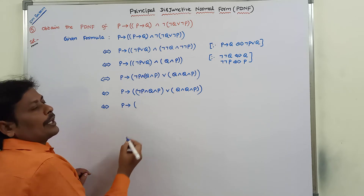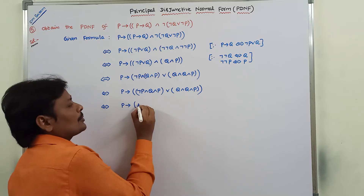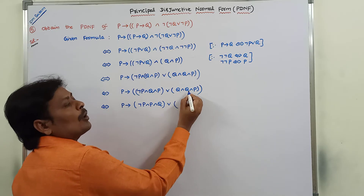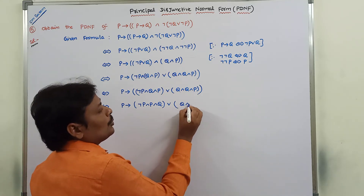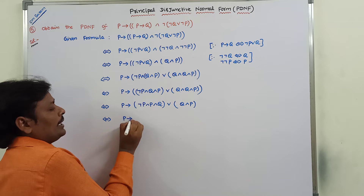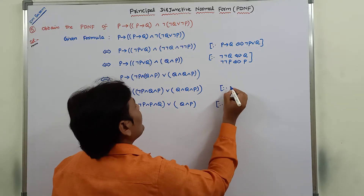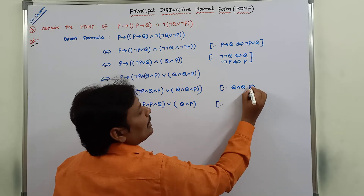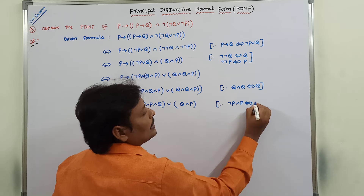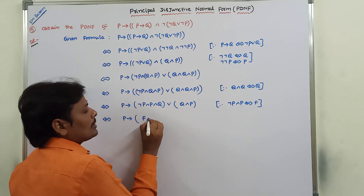P can be rewritten after negation P. So that gives (negation P and P and Q). Here Q and Q is nothing but Q, so this simplifies to Q and P. We already know that negation P and P is logically equivalent to false. So (negation P and P) becomes false, giving us false and Q.